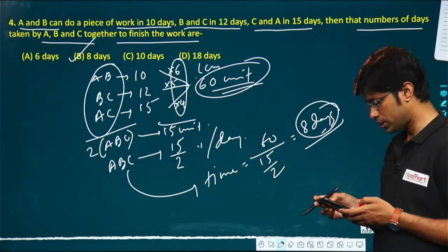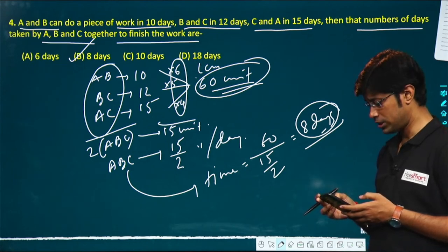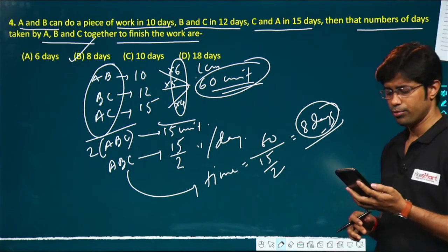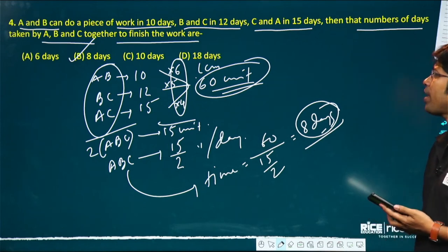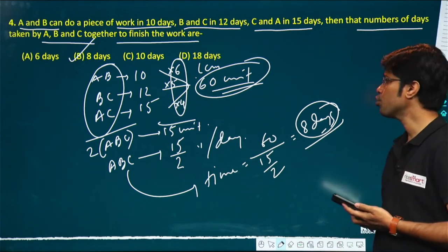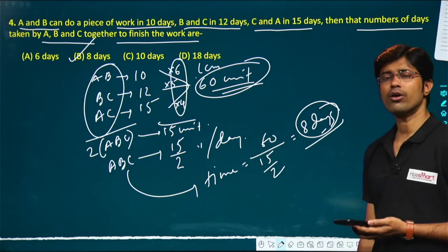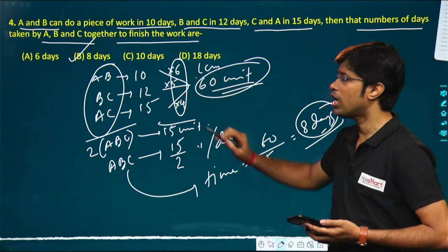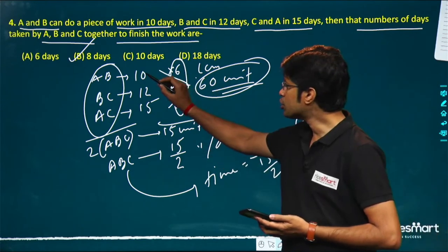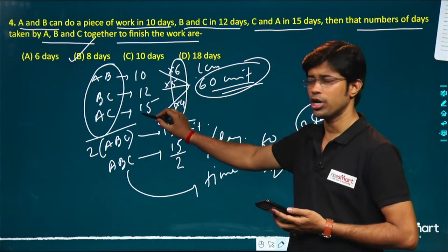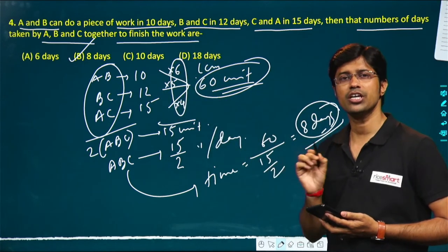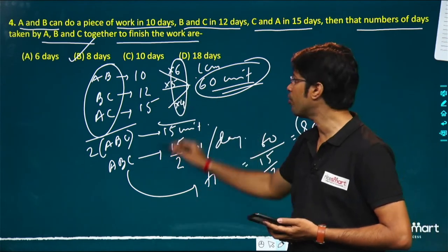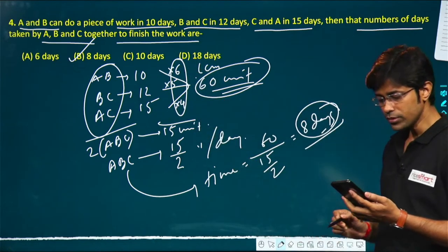Time taken by A, B, and C together = 60/7.5 = 8 days. Option B, 8 days, is the answer. This is a very important concept for upcoming exams like CGL, CHSL, and police exams.